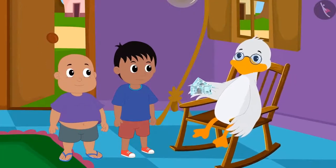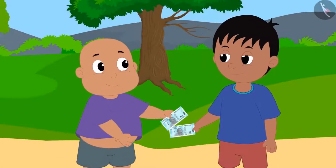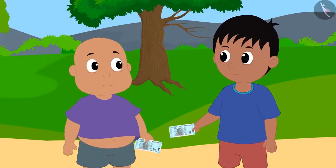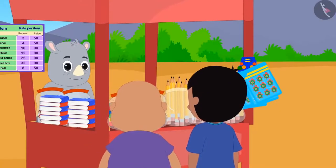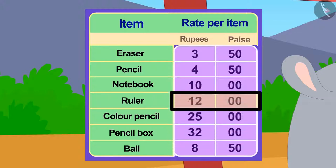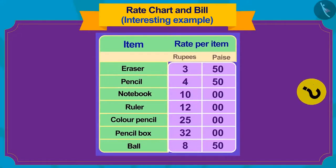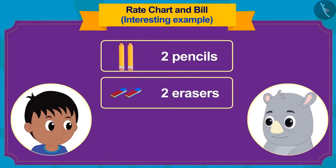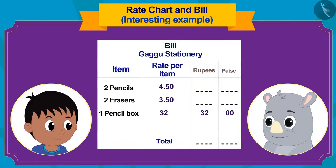Uncle gave Raju and Bablu 50 rupees each for helping him get some goods from the market. There is a bet between Raju and Bablu that whoever buys the most number of items from his 50 rupees will be the winner. Now Raju and Bablu reached Gaggu's shop, which has a rate chart board showing the prices of goods. Raju purchased 2 pencils, 2 erasers, and 1 pencil box from Gaggu. Can you fill the empty spaces in the bill made by Gaggu?